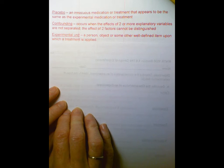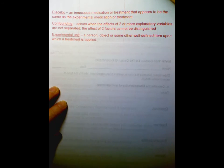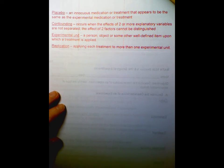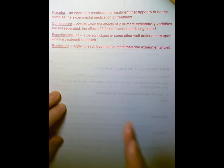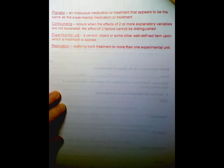Experimental unit. A person, object, or some other well-defined item upon which a treatment is applied. It's just our individuals again, just a fancy word for that. Replication. Applying each treatment to more than one experimental unit. So we're replicating the study on each experimental unit.